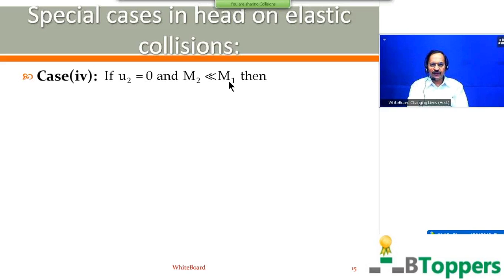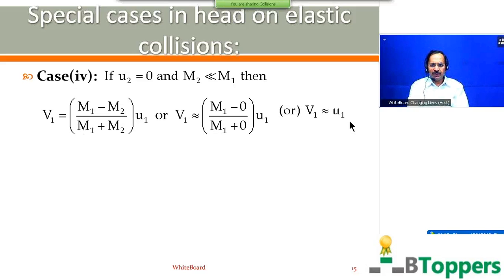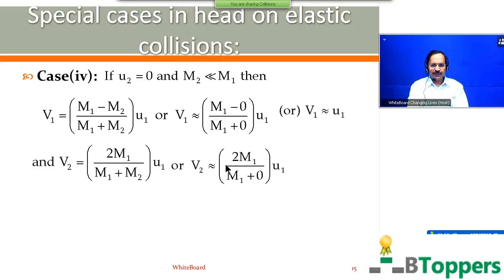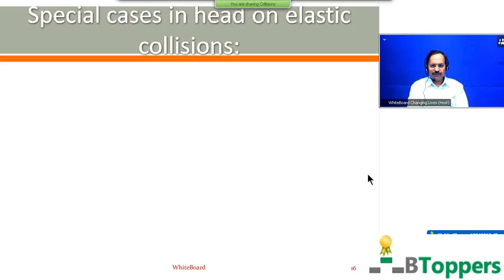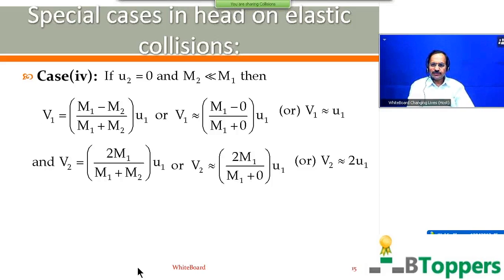Case 4: If U2 is zero and M2 is very small compared to M1, neglecting M2 compared to M1 in the equations, you get V1 approximately equal to U1 and V2 approximately equal to 2U1. In my next class, I will discuss one problem in elastic one-dimensional collisions, then I will discuss one-dimensional inelastic collisions.